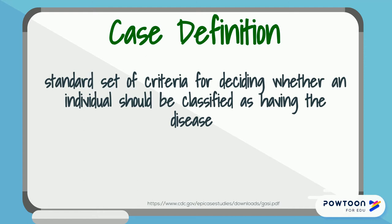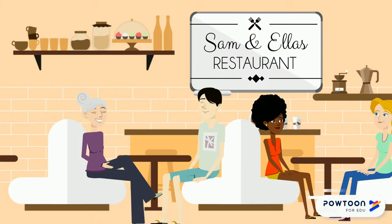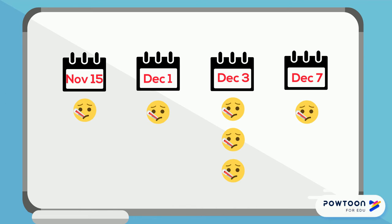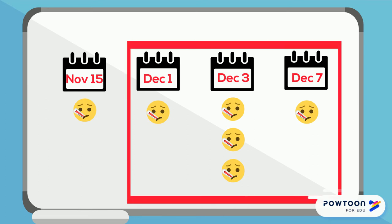Let's look at an example of a surveillance case definition versus an outbreak case definition. For our example Salmonella outbreak, we are collecting information from people who ate at Salmonella's restaurant between November 28th and December 4th and are either suspected or confirmed Salmonella cases. Their symptom onset would be somewhere between December 1st and December 7th. It is possible for someone to be sick with an illness and not be counted. If we set December 1st as the onset date and an individual became ill on November 15th, it doesn't mean they weren't ill — it just means they didn't meet our criteria for this outbreak.